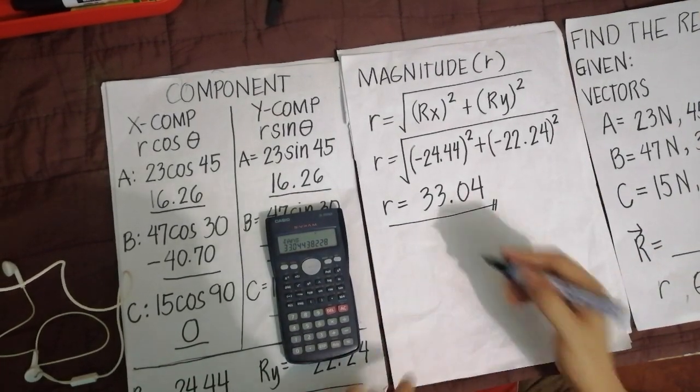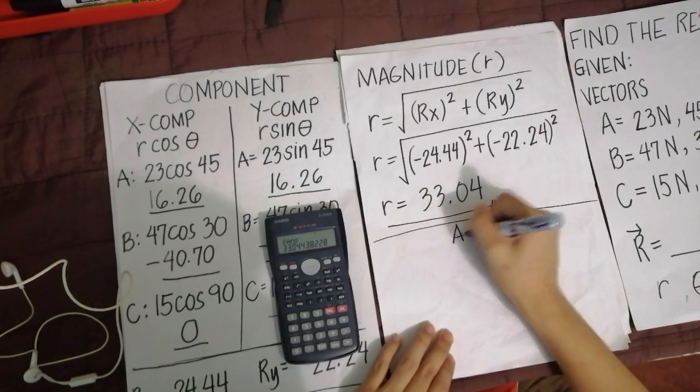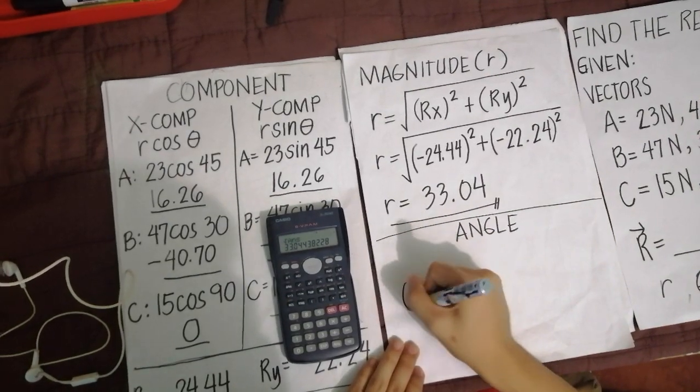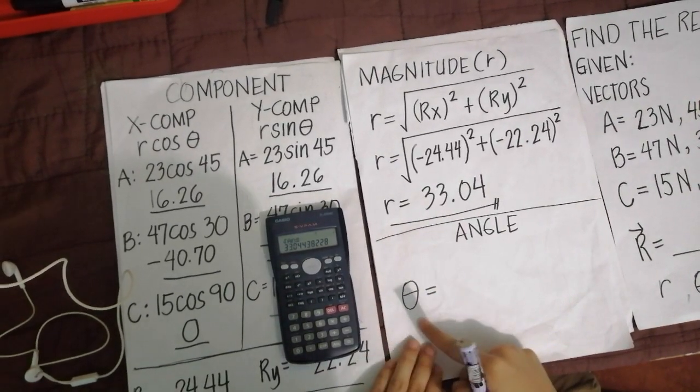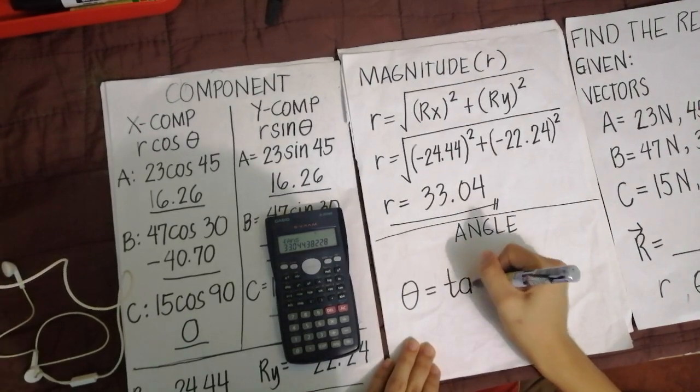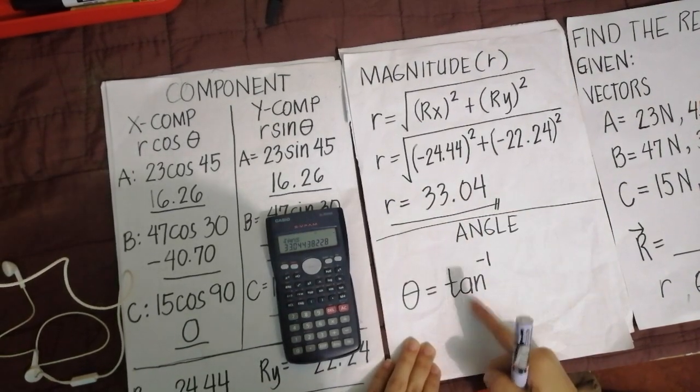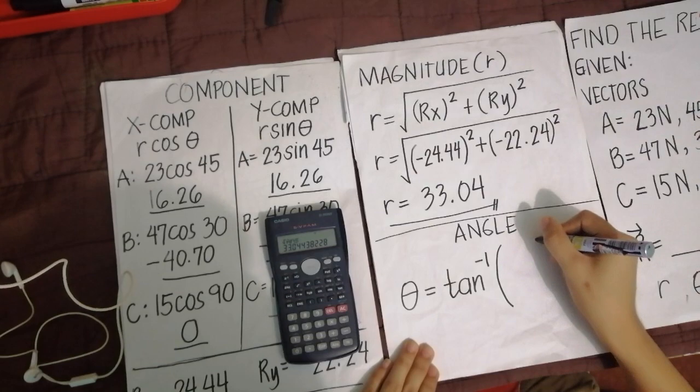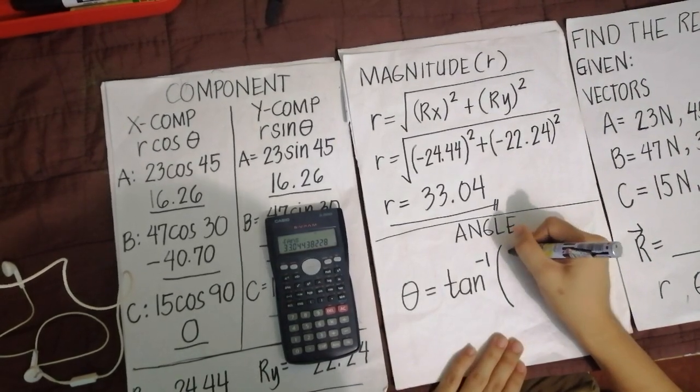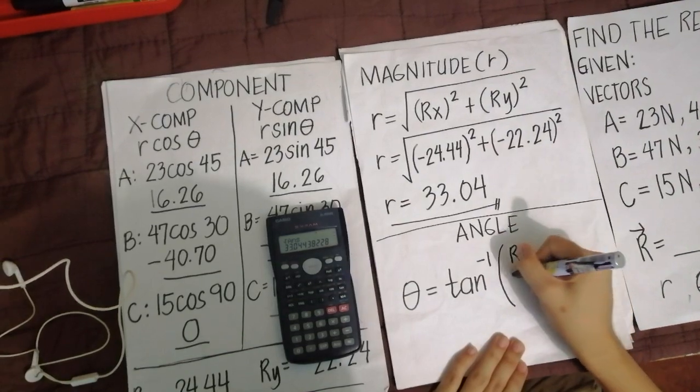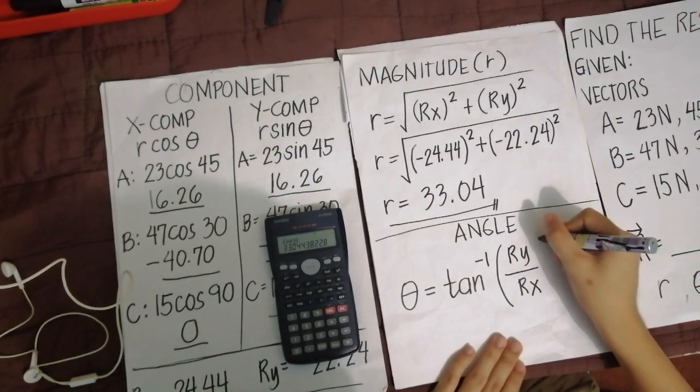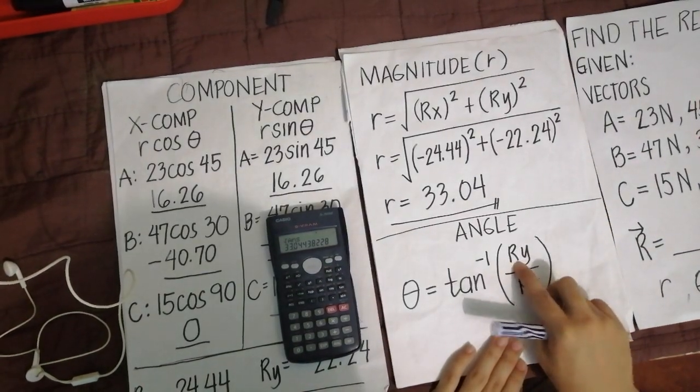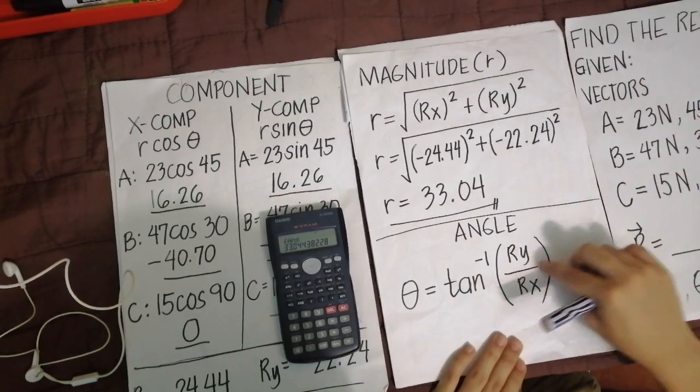Okay, yung theta naman ngayon may formula rin dyan. To get the angle. Final angle. Okay, theta is equal to, yan yung formula natin, R tangent. Okay, we read this as R tan or R tangent. Then, gagawa tayo ng open and close parenthesis. Guys, dito is the R y over R x. Kanina doon R x squared at R y squared. Dito wala nang squared. R y lang. R y at tandaan to. R y over R x.